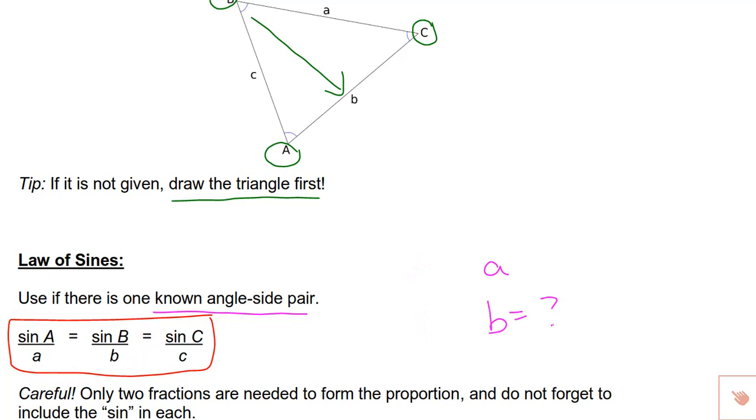Lastly before we move on to some specific examples involving law of sines I just want to remind you of something that probably seems obvious but is something many students tend to forget when they're first learning this rule. Make sure that you put the sine in front of the angle of the proportion. So it says sine A over a for instance not just A over a. Again minor detail that has a huge impact on the answer.